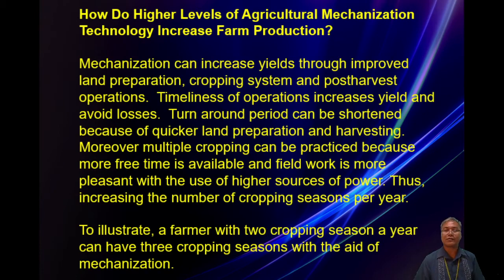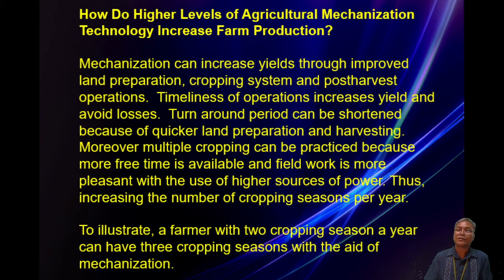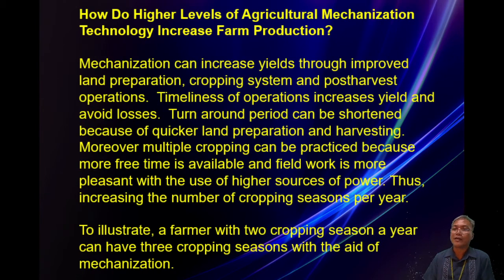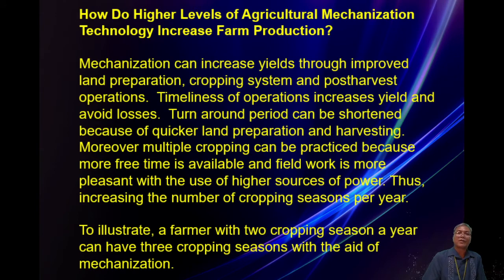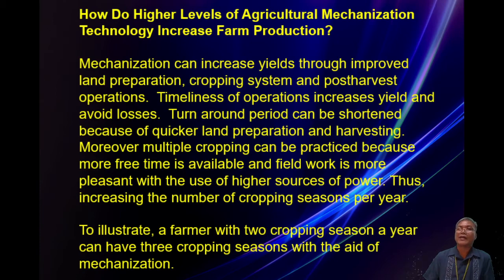For example, in your area you usually have two cropping seasons. But because of mechanization, your land preparation is faster, and if you are using early-maturing seeds, you can instead of having two cropping seasons a year, increase it to three. That's how mechanization improves or increases farm production.